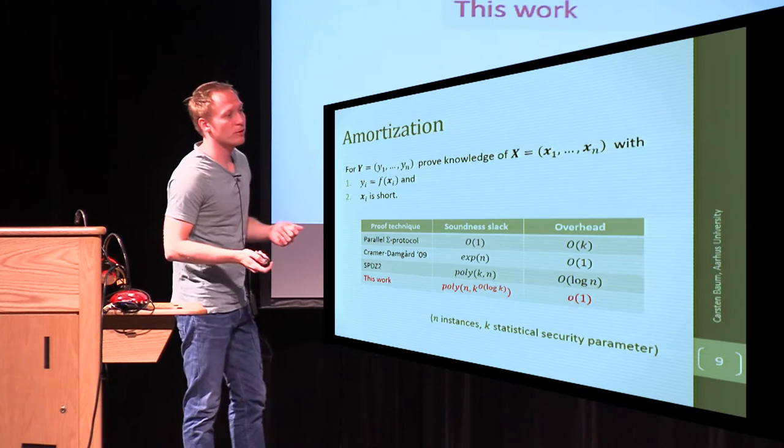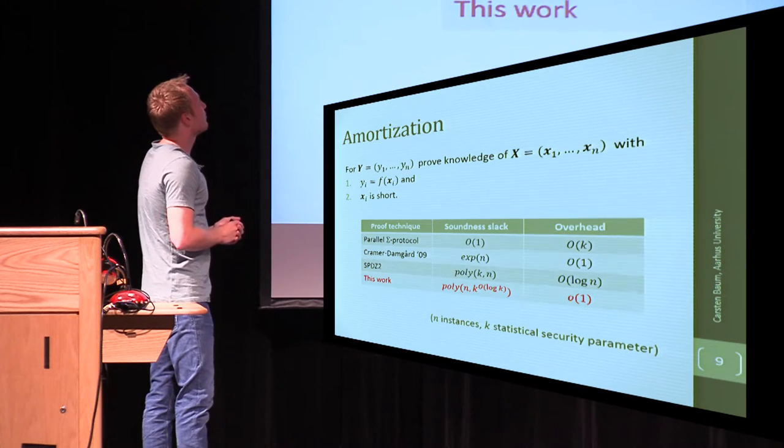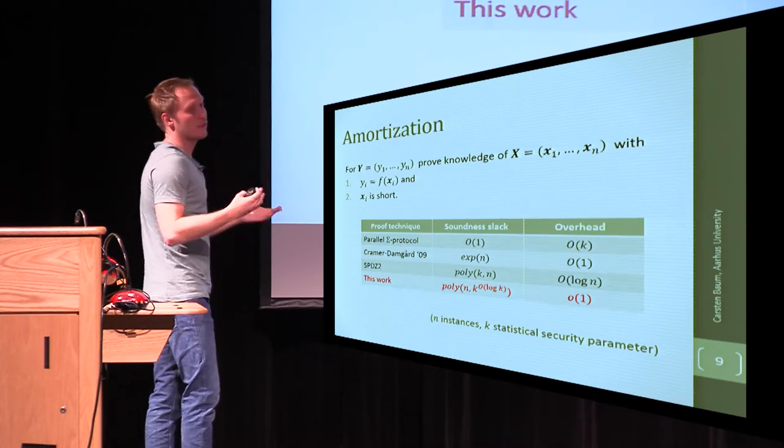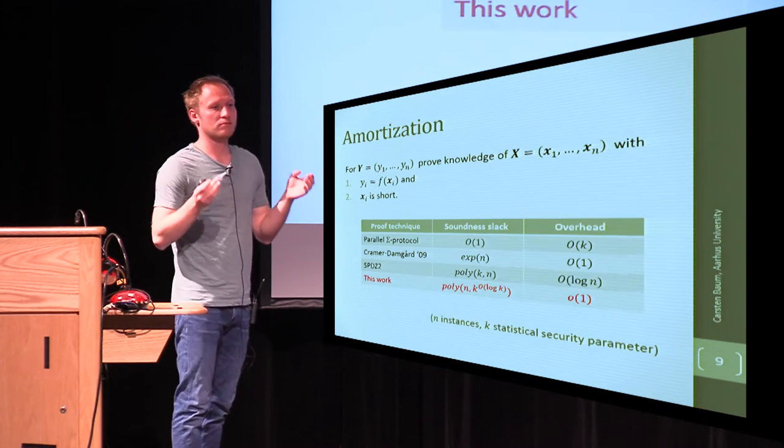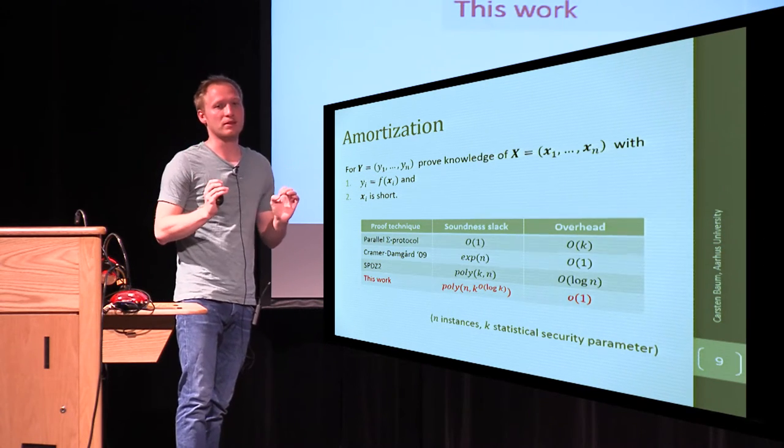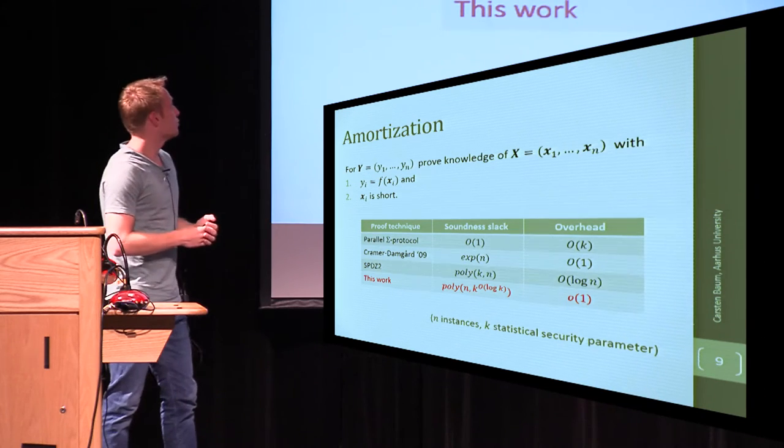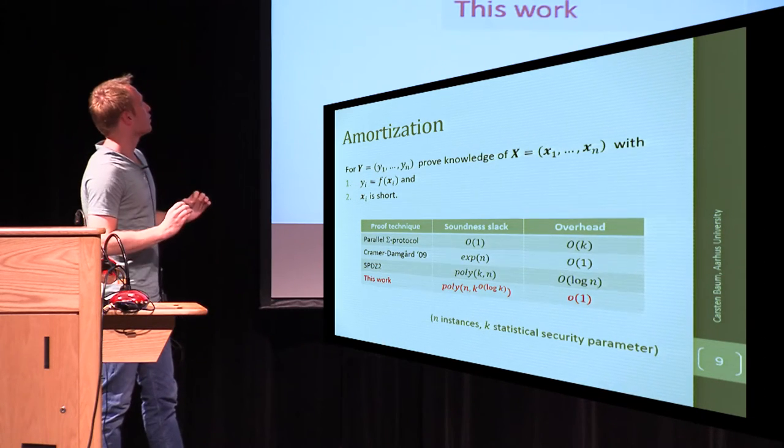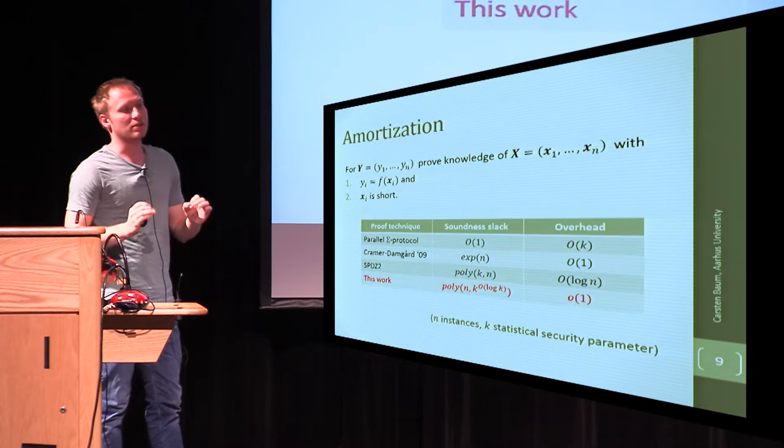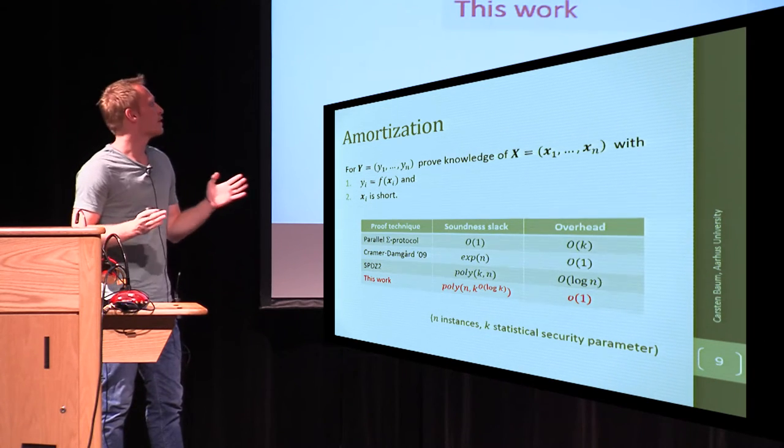So, but don't worry, not all hope is lost. The most straightforward idea would now be, if we can't go for one ciphertext and make it better, or one pre-image and make it better, can we prove knowledge of a lot of them at the same time, while making the overhead quite small?